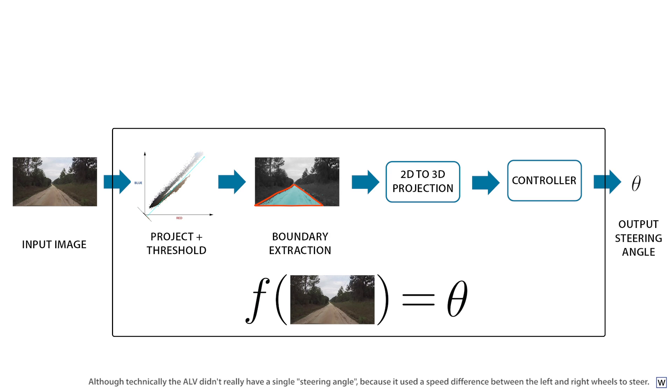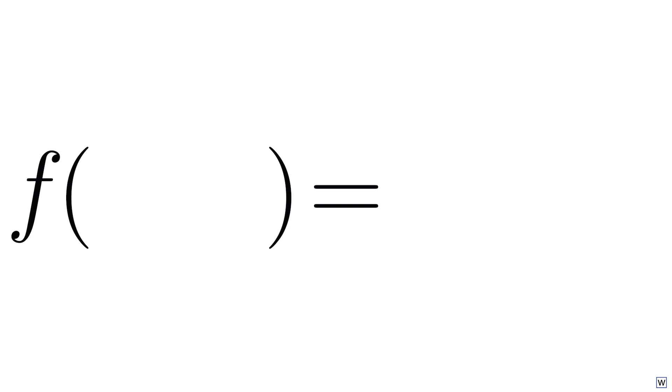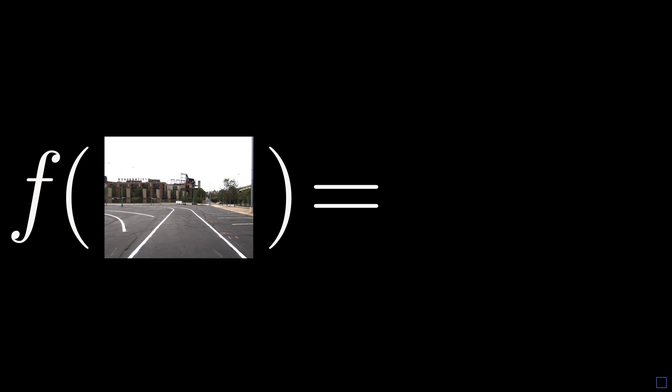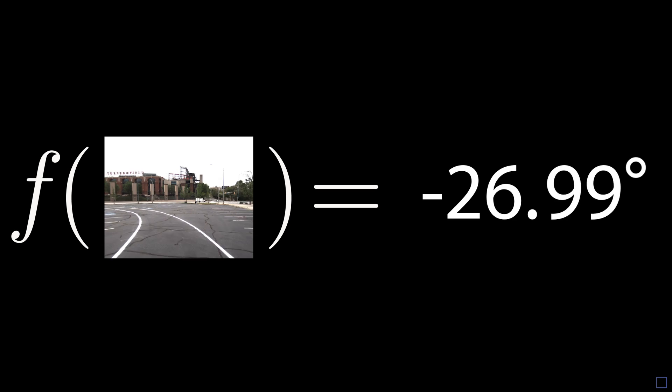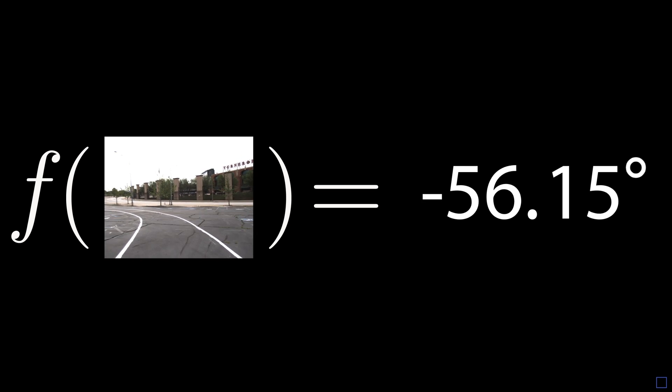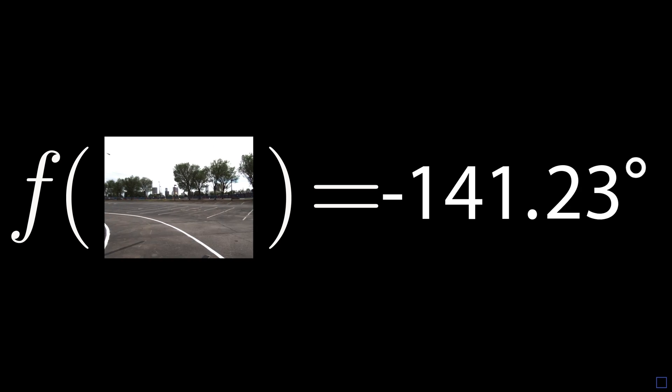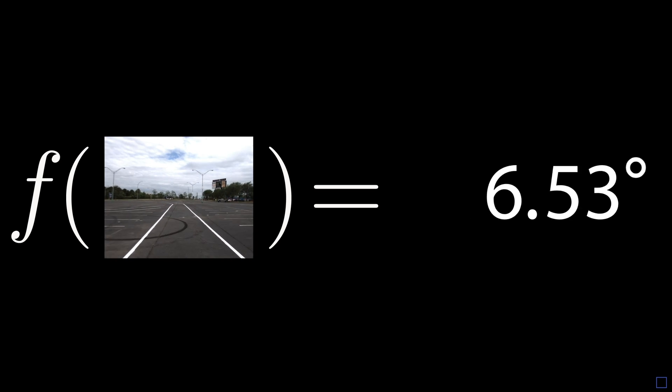Now, the ALV team chose to break apart this math problem into these discrete blocks, but we could of course choose other ways to break apart the mapping from input images to steering angles. And generally, we can think of the process of steering a vehicle autonomously as a single big math problem, where we're trying to find some function that takes for its input our sensor data, in this case our input image, and for its output returns just one single number, the angle to turn the steering wheel. To steer a car autonomously is to find a solution to this math problem.